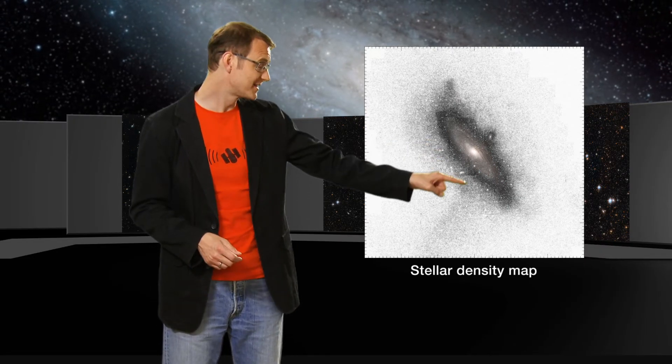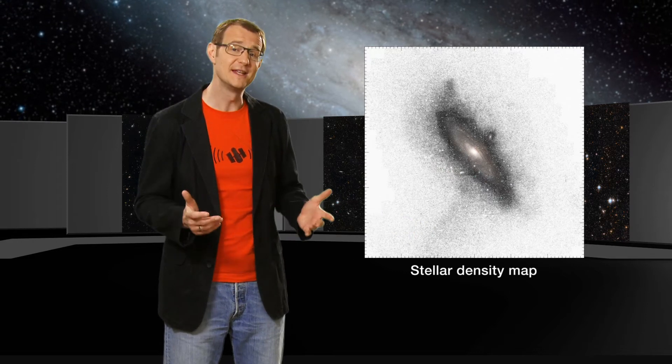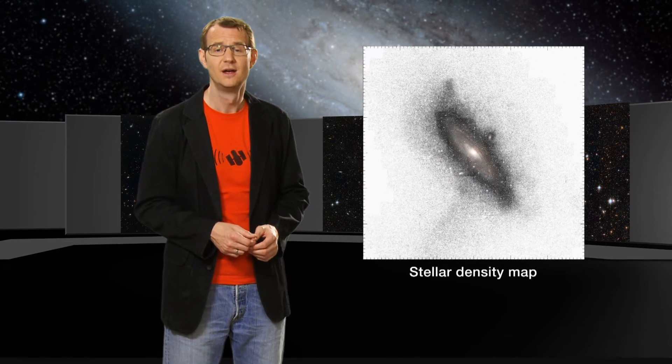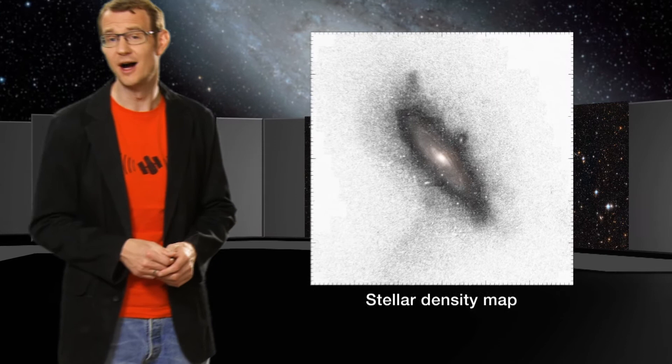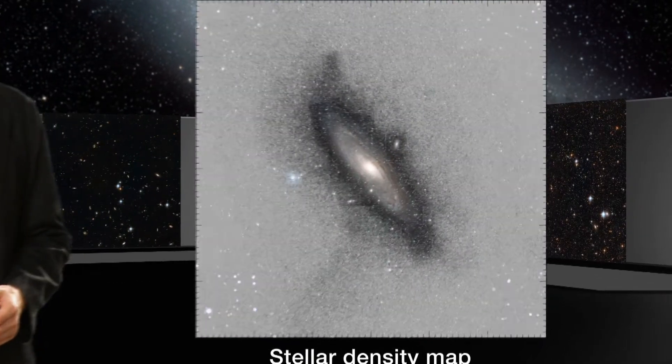This giant stellar stream is noticeably denser than the rest of the halo. This swathe of stars was left behind by a dwarf galaxy that was swallowed by Andromeda.